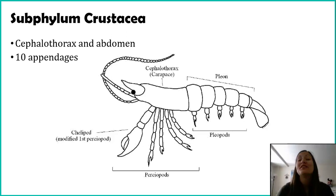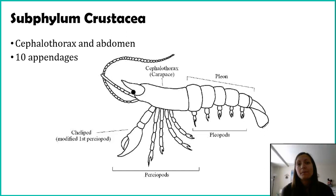We've got two more subphyla to talk about. The next subphyla we'll talk about is subphyla Crustacea. I like talking about Crustacea because they're a really great organism for thinking about ecdysis. Remember, ecdysis means you have a hard outer shell, and in order to grow, you have to molt that shell.